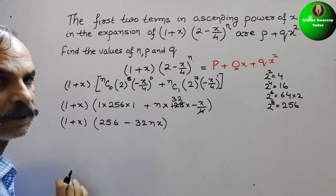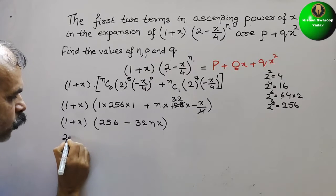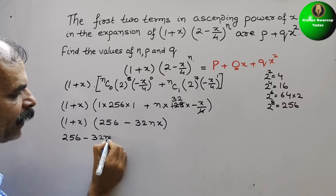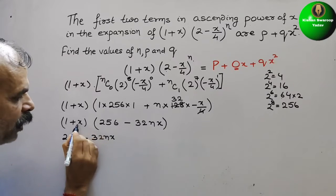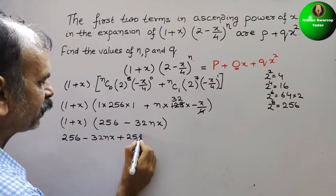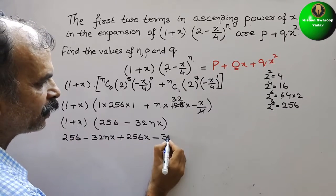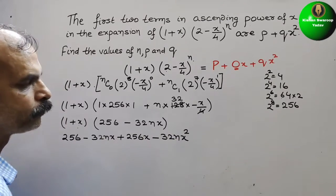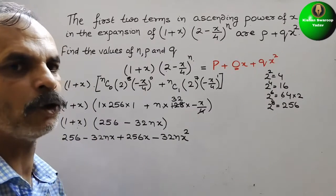Now we multiply out. 1 times (256 - 32nx) gives 256 - 32nx. Then multiplying x by (256 - 32nx) gives +256x - 32nx². So the full expansion is 256 + (256 - 32n)x - 32nx².